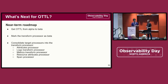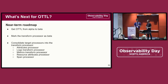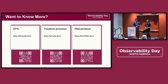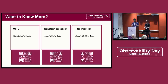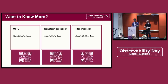Once we've promoted the transform processor to beta, we'd like to start deprecating redundant processors. We have an issue open already to determine exactly how we're going to approach this, but the processors we're targeting right now are the attribute, logs transform, metrics transform, resource attribute, and span processors. Our goal is to make this deprecation as painless as possible. If you've made it this far and want to know more about the things we talked about today, here are some links to the different components. Our goal is to always make our documentation for OTTL better — we want people to easily learn how to use OTTL, how it enables their use cases, and what it's all about. Please let us know in CNCF Slack or GitHub Issues if you want to provide feedback.